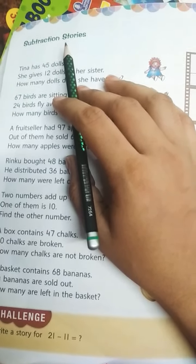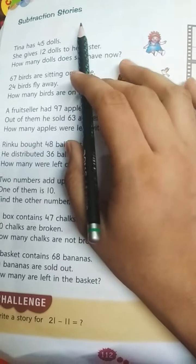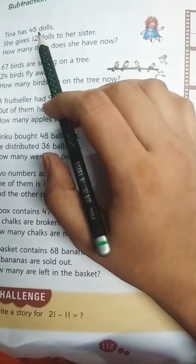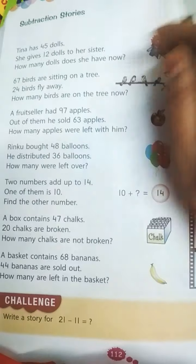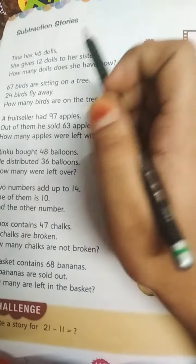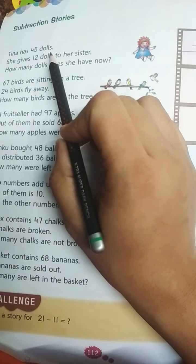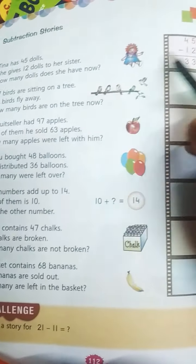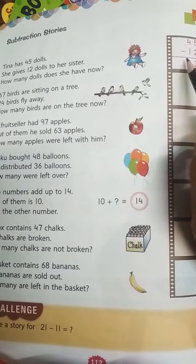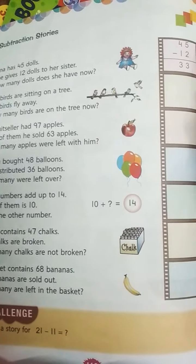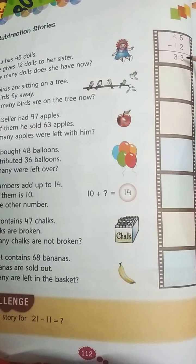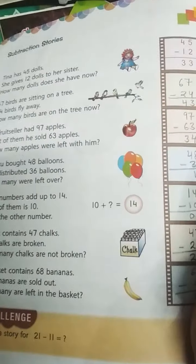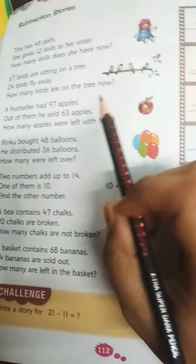Okay, this is subtraction class. First, subtraction stories, page number 112. Now we are going to solve some questions. You have to do it in your book and notebook. Tina has 45 dolls and she gives 12 dolls to her sister. How many dolls does she have now? 45 dolls minus 12 dolls. 5 minus 2 is 3, and 4 minus 1 is 3. Got it?